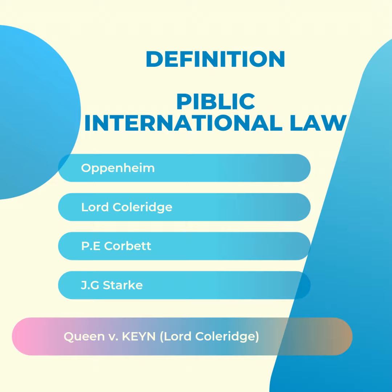In Oppenheim's definition he considered only the interaction between civilized states. J.G. Stark's definition is the most appropriate in the present-day scenario. Here, international law is defined as a body of law, the major part of which consists of principles and rules of conduct — how nations should behave with each other. Stark notes that it is not legally binding in a formal sense, but nations consider themselves bound to observe it and therefore do commonly observe it, since there is no international legislative body that can actually grant sanctions.